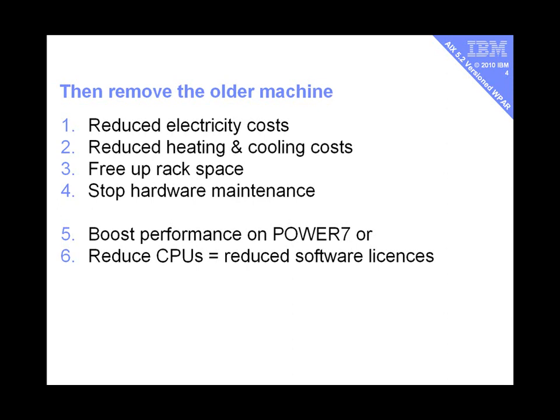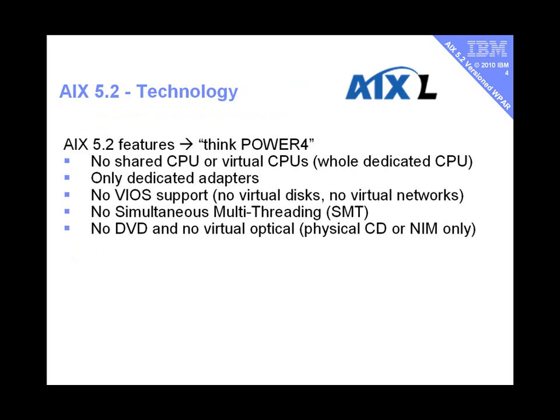When you move onto a Power 7 machine you can expect quite a big performance boost, which could be very useful. Or you could look at it the other way — you reduce the number of CPUs because it's Power 7, and that may reduce your software license costs. To try out this technology, we had to create a mksysb for AIX 5.2. There's no shared CPUs — you have to allocate a whole dedicated CPU. There are dedicated adapters, no VIO support, no virtual disks or networks, no SMT (that came with Power 5), no DVDs — just CD drives. You can boot off a physical SCSI CD drive or do a NIM install, which is how we did it.